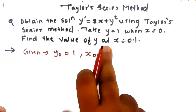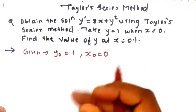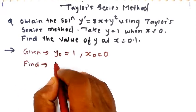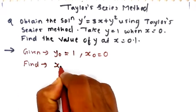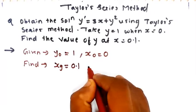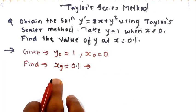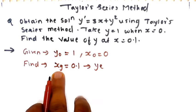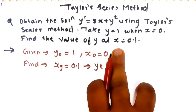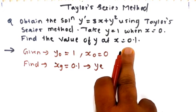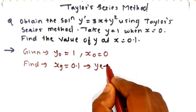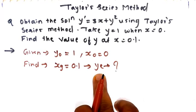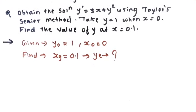We have to find the value of y at x₁ = 0.1. At the value of x₁ = 0.1, you have to find out the value of y₁. To find out the value of y₁, you have to follow some steps for the Taylor series method.